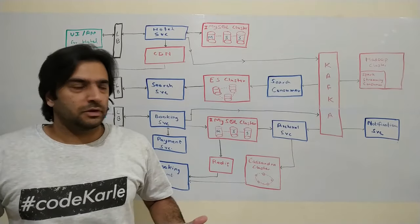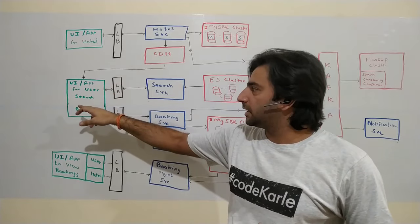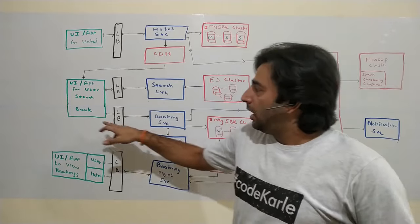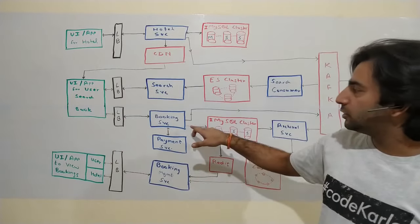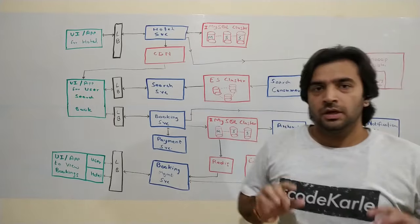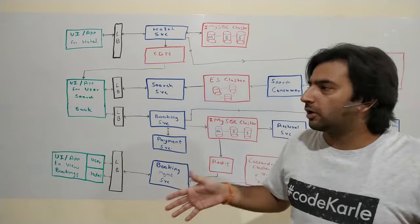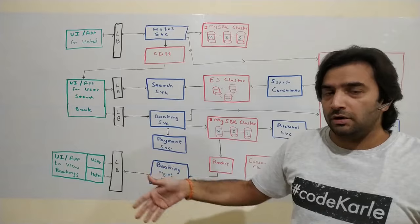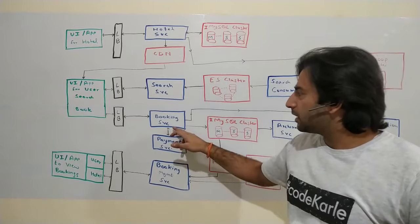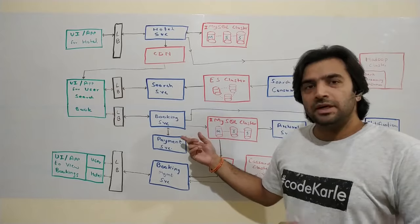Once the user has seen results and wants to book, the booking request comes through the same UI — a search and book UI — through a load balancer to the booking service. The booking service sits on top of its own MySQL cluster, separate from the hotel MySQL cluster, so scaling can be handled independently. Whenever a booking happens, data gets stored into this MySQL. We'll go over the exact booking flow when we cover the booking service details.